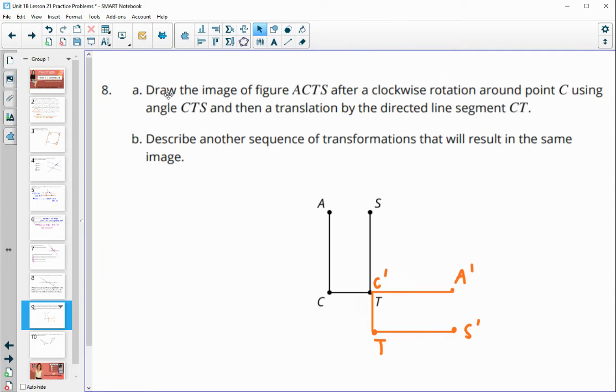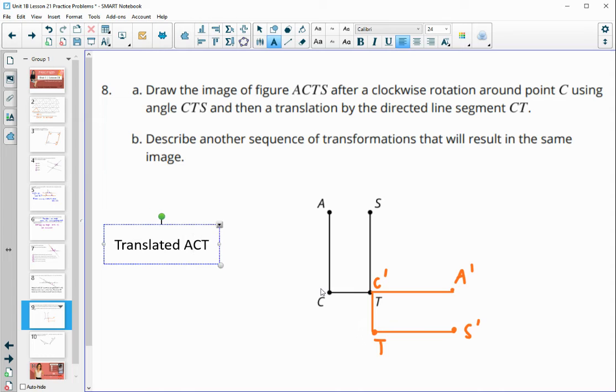And then just describe another sequence of transformations that would do the same thing. So we could have translated it first. So we could have translated ACTS by directed segment CT. So that would have moved us over to here.